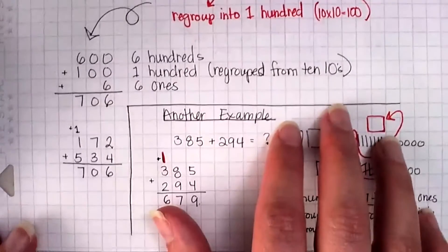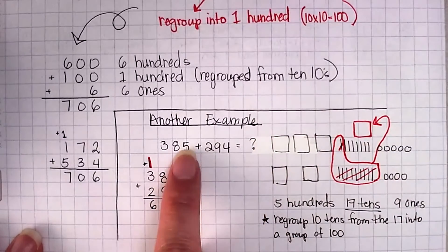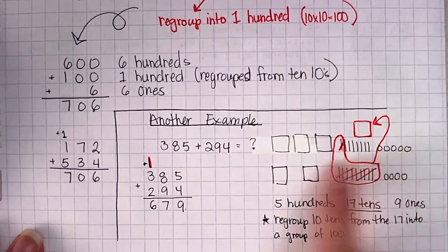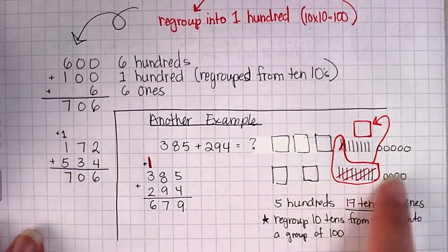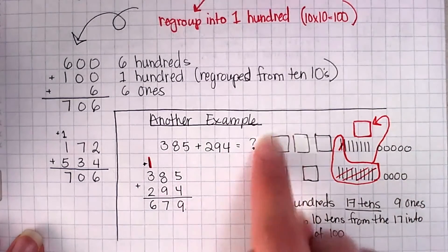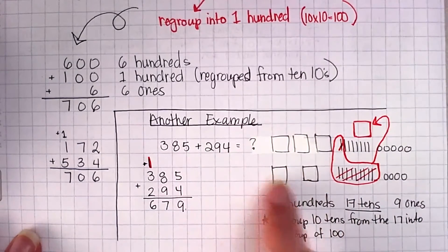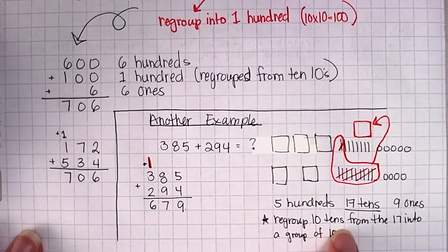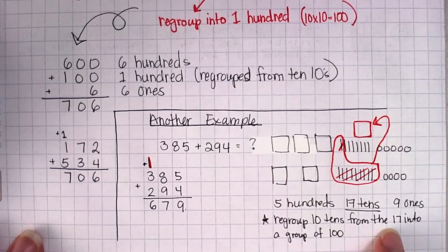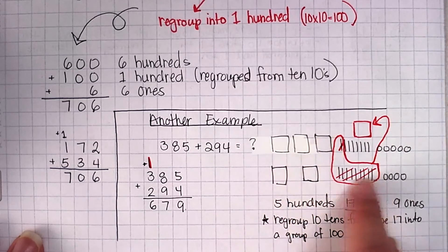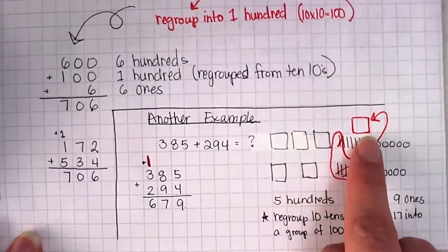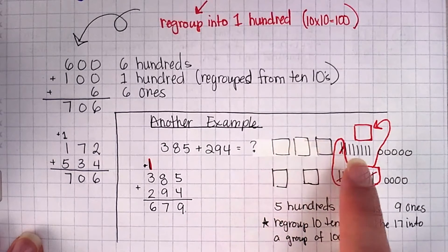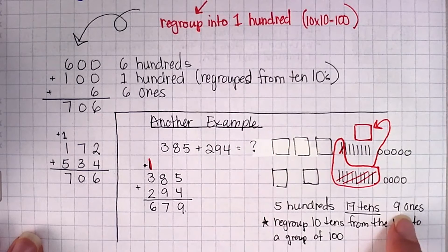Let's take a look at another example. Now the numbers I have here are 385 plus 294. So I drew my 300, 80, and 5. And then I drew my 200, 90, and 4. Now here I can see that I have 500s altogether. I have 17 tens, and I have 9 ones. So I'm going to regroup 10 of those tens from the 17 into a 100. So you can see over here, I took out 10 of them, and I turned it into 100. So now I had an extra 100. I only had 7 tens, and I had 9 ones.